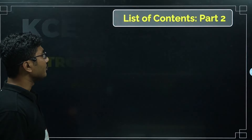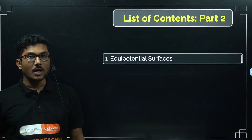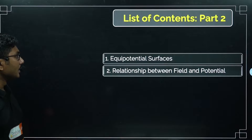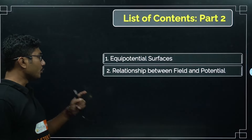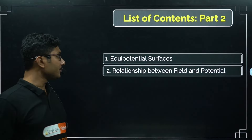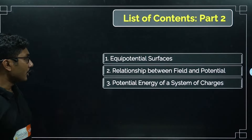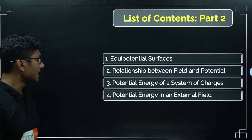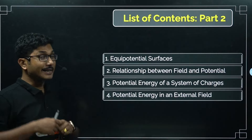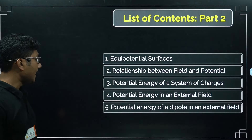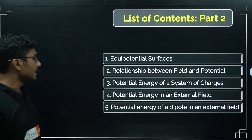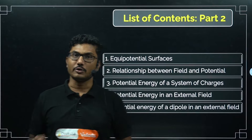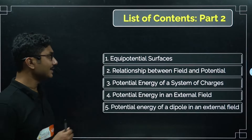Let's see what we are going to discuss today. First, we will start with equipotential surfaces, then go to the relationship between electric field and potential, then potential energy of a system of charges. After that, potential energy in an external field — which is very important — and lastly, potential energy of a dipole in an external field.